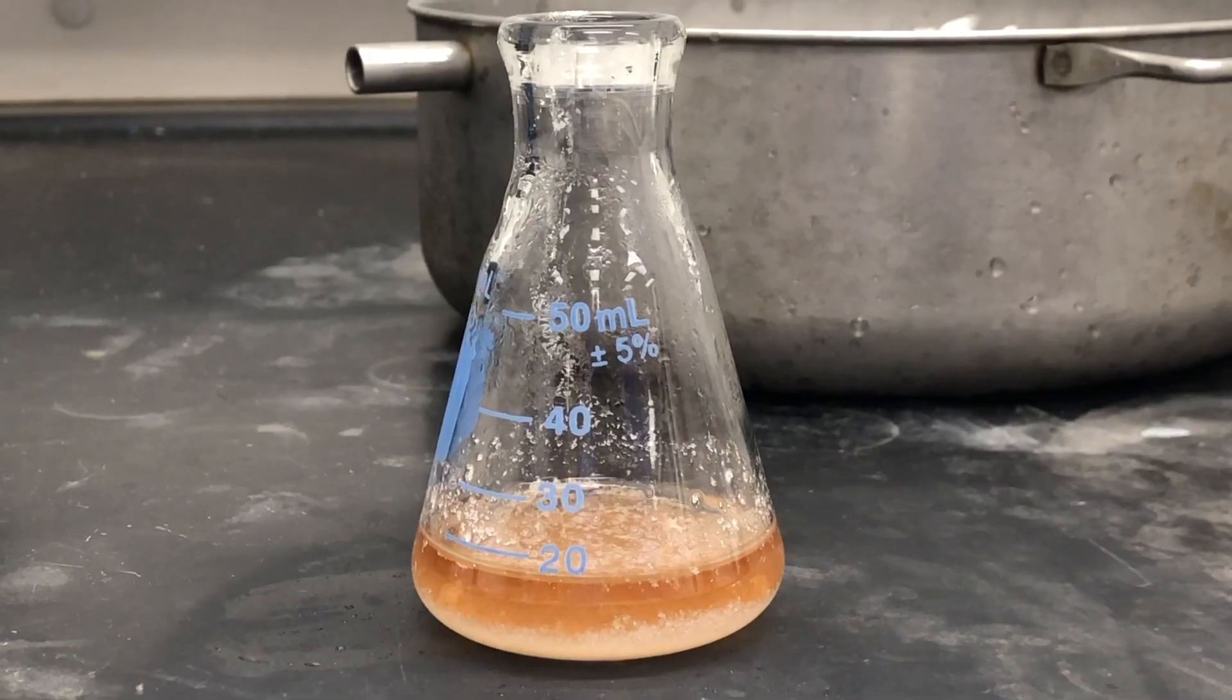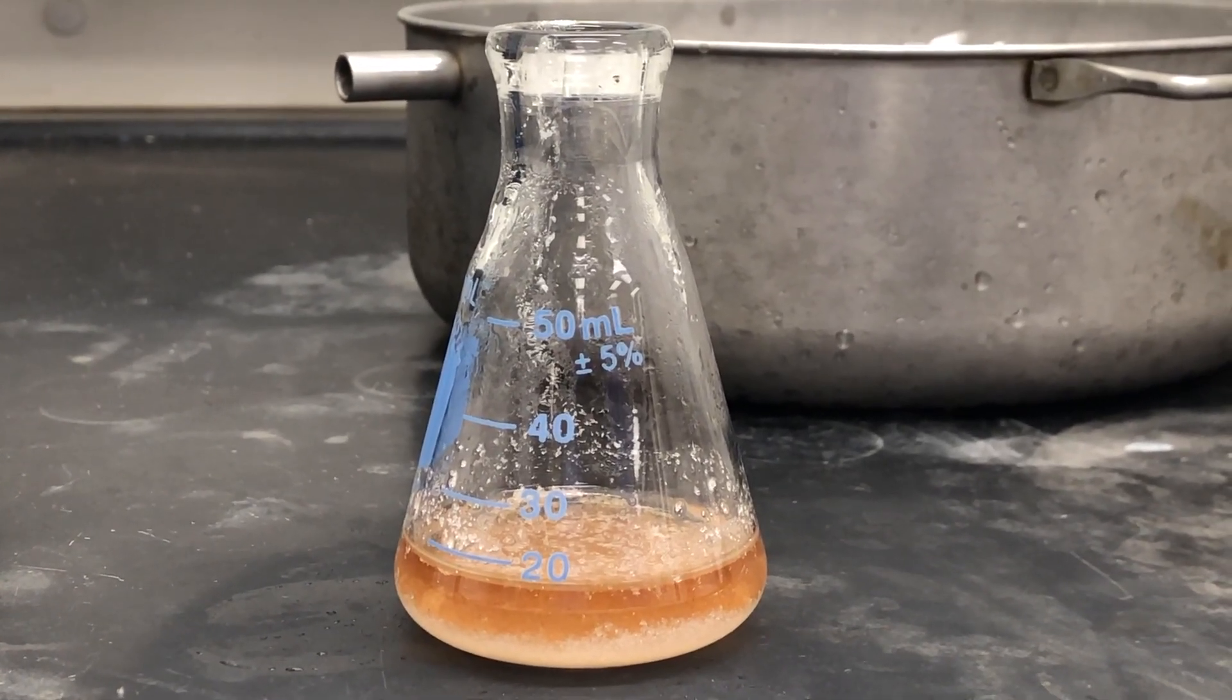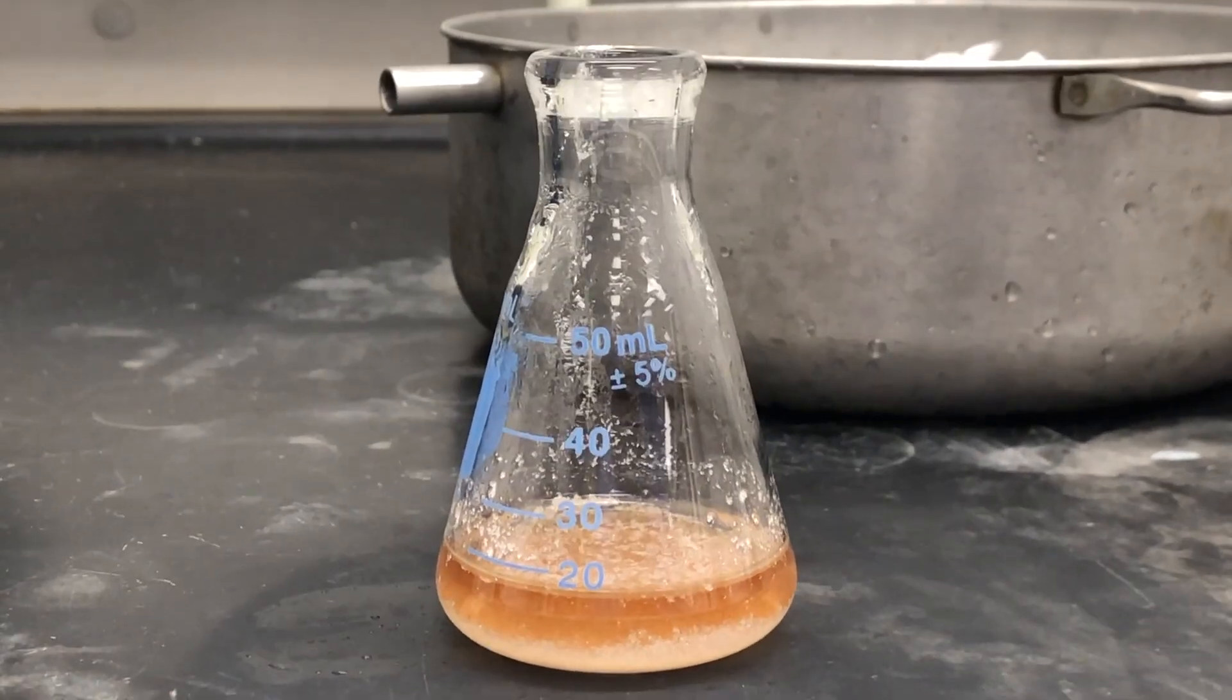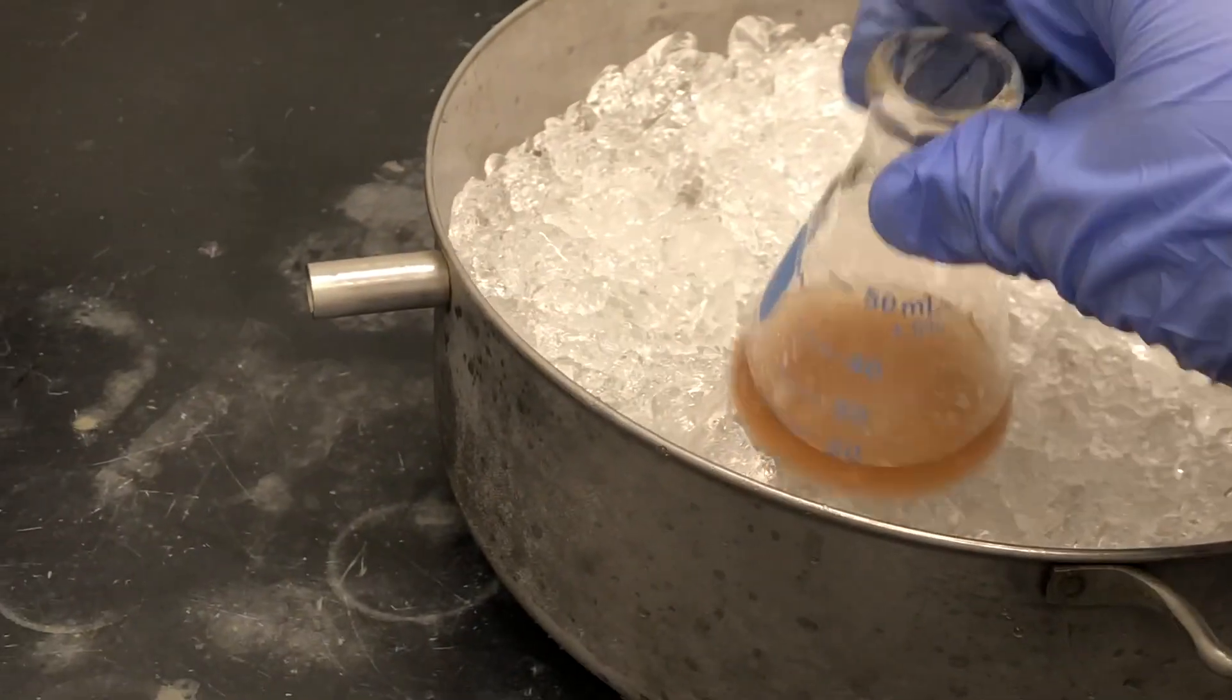The system is in equilibrium, so you want to make sure you allow it to form the product slowly. Now that it has reached room temperature, we're going to go ahead and take the flask and place it in an ice bath.